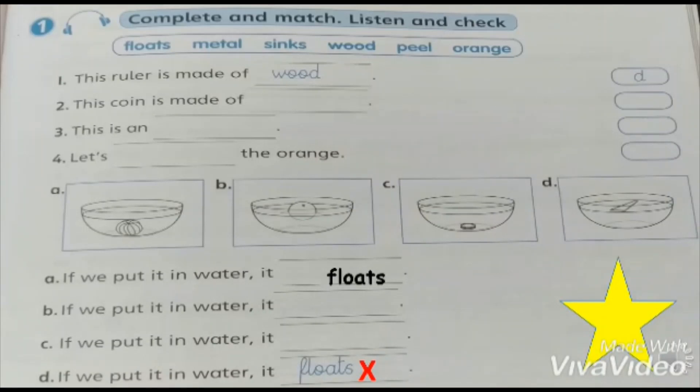Two, the coin is made of what? The coin is made of? Excellent. Metal. So it's picture number C. If we put it in water it sinks.